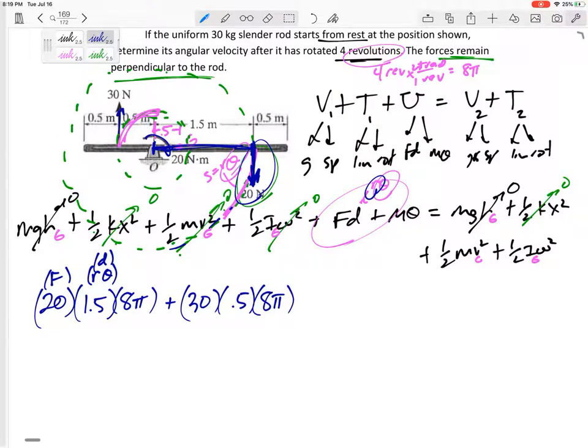Let's do the M·θ. The moment is 20 Newton meters, the theta is four revolutions but has to be in radians—the theta is 8π. Is it positive? Yeah, it's clockwise and this theta is going clockwise.